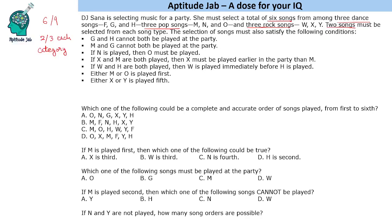Do not try to make all possible combinations — just look at the questions and answer them. Question 1: Which one of the following could be a complete and accurate order of songs played from first to sixth? Let us look at the options and try to eliminate those that violate any condition.